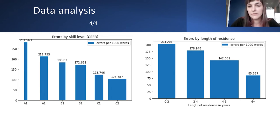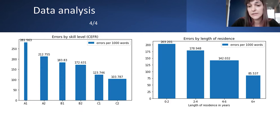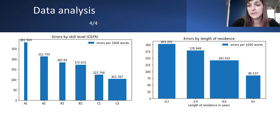We noticed some known stagnation points — for example, between levels B1 and B2, some error code instances actually increase rather than decrease. As for length of residence, it is mostly intertwined with skill level and drops steadily, but even for people who have been in Iceland for more than six years and have studied Icelandic at the university, written error instances are still twice as many as in the L1 corpus.